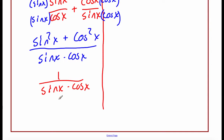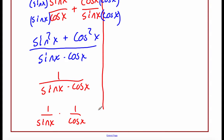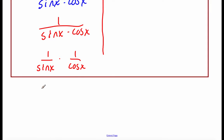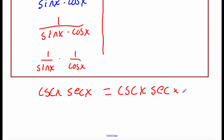Now I'm going to split this fraction apart. Since there's multiplication on the bottom, we can split into two separate fractions: sine of x on the bottom of one and cosine of x on the bottom of the other, with 1 on top of each. One over sine is cosecant of x, and one over cosine is secant of x. Even though the order is reversed, cosecant of x times secant of x is the same as secant of x times cosecant of x — so we're done with this one.